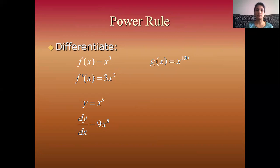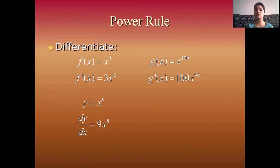Third example: g(x) = x¹⁰⁰. Here the value of N is 100. Apply the derivative on both sides. Derivative of g(x) is g'(x), and the derivative of x¹⁰⁰ is 100 times x raised to 100 minus 1, that is x⁹⁹.